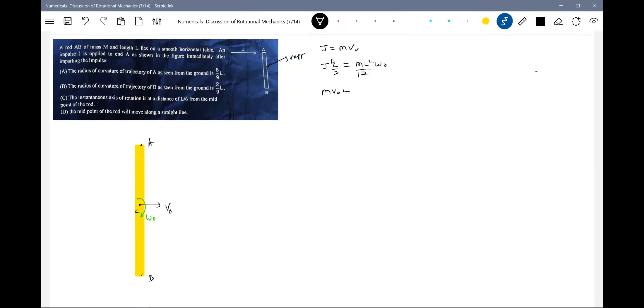Substitute J here: mv_not times l by 2 equals ml square by 2 omega naught. So v_naught is equal to l omega naught by 6. The relation between v_naught and omega naught - till here no problem.